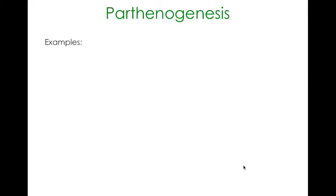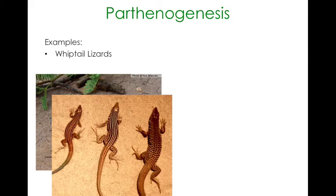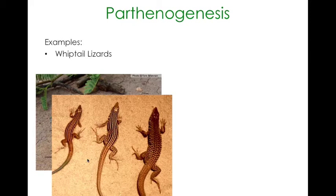An example: whiptail lizards. Interestingly enough, there is a species variant of whiptail lizards that is all female. This particular species reproduces only by parthenogenesis; there are no males in this species at all, which is quite an interesting phenomenon. This whiptail subspecies sits between two other species — one male of one species and one male of another — and due to some sort of genetic mutation in the population, you've got this all-female species.